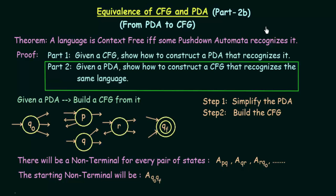In the last lecture we discussed part 2 of our proof of the equivalence of CFG and PDA — that a language is context free if and only if some pushdown automata recognizes it. We were discussing part 2, in which we are given a PDA and trying to show how to construct a context free grammar that recognizes the same class of languages. There are two steps: step 1 was to simplify the PDA, done in part 2a. In this lecture, part 2b, we discuss step 2: building the context free grammar.